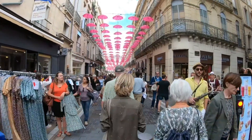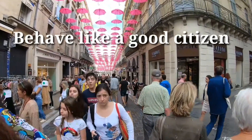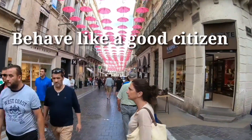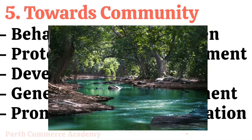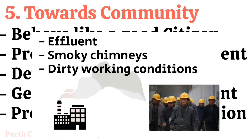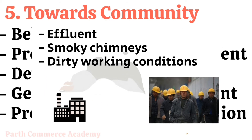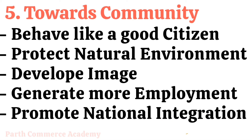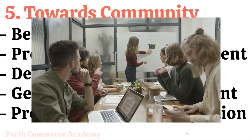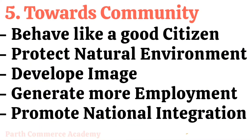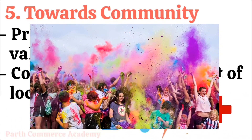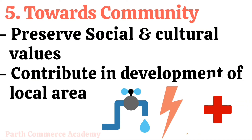Next is social responsibility of business towards the community. First is to behave like a good citizen and act according to the well-accepted values of society. Next is to protect the natural environment by avoiding bad effluents — meaning waste discharge — smoky chimneys, dirty working conditions, etc. Next is to develop a proper image in society through continuous interaction with various groups of people, generating more employment opportunities. Next is to promote national integration and preserve social and cultural values. And the last is to contribute to the development of the local area by providing facilities like drinking water, electricity, dispensaries, etc.